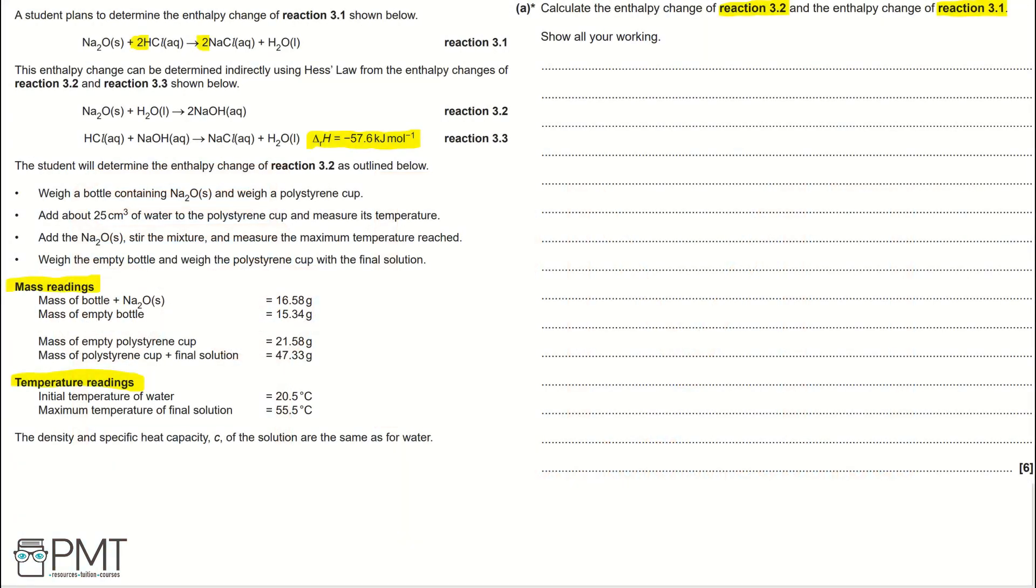A student plans to determine the enthalpy change of reaction 3.1 shown below. This enthalpy change can be determined indirectly using Hess's law from the enthalpy changes of reaction 3.2 and reaction 3.3 shown below. We are given the enthalpy change of reaction 3.3 as negative 57.6 kJ per mole.